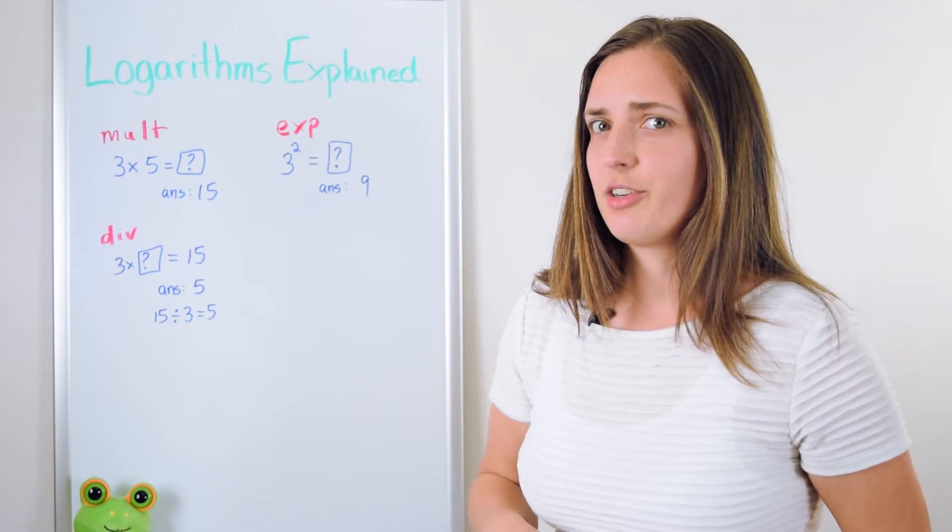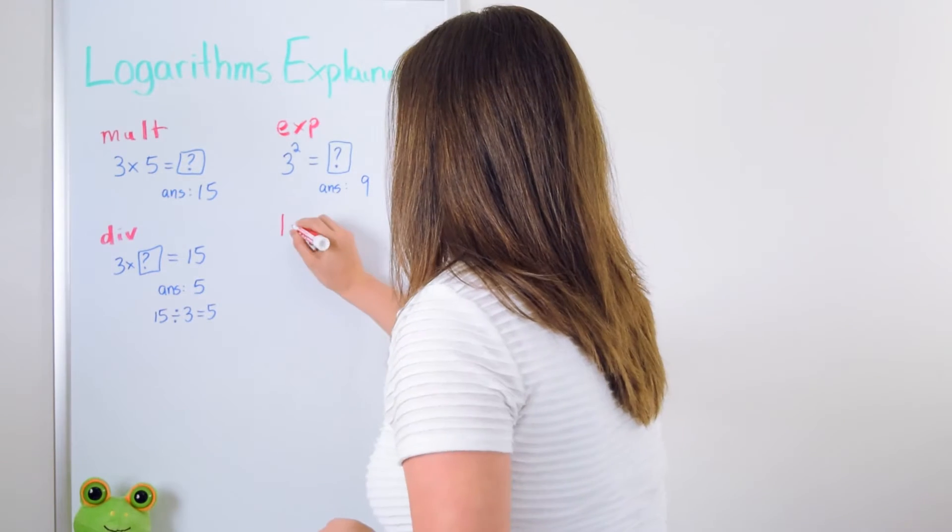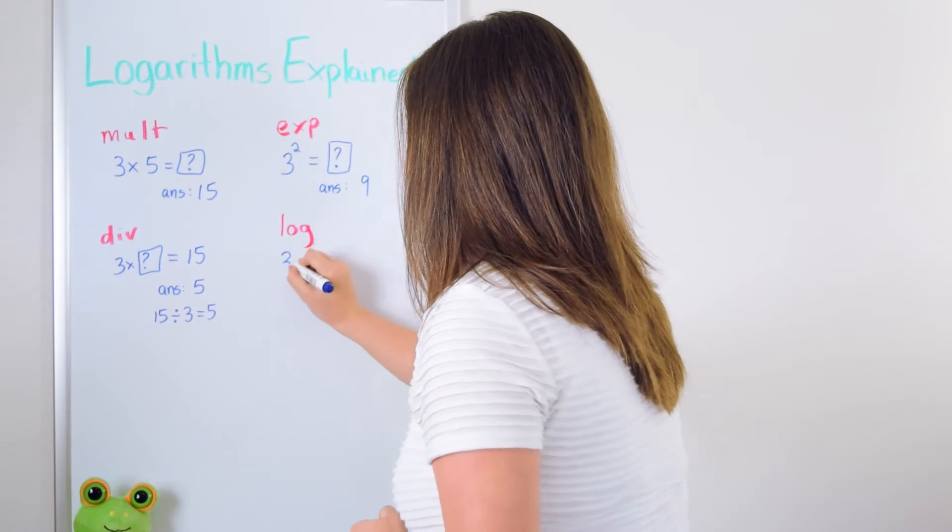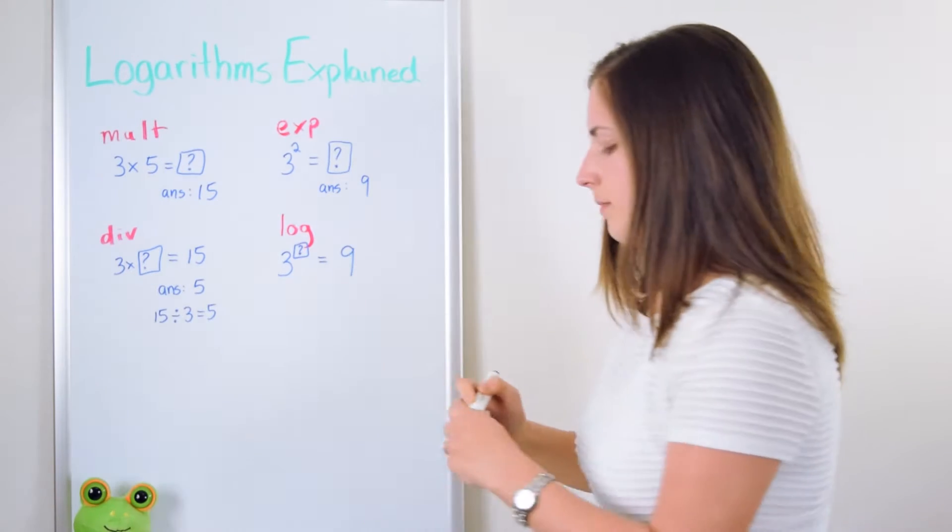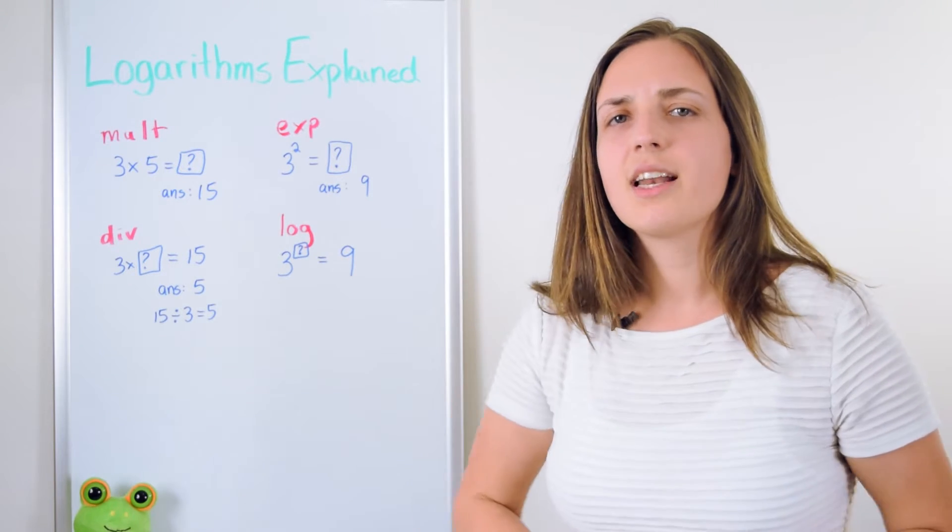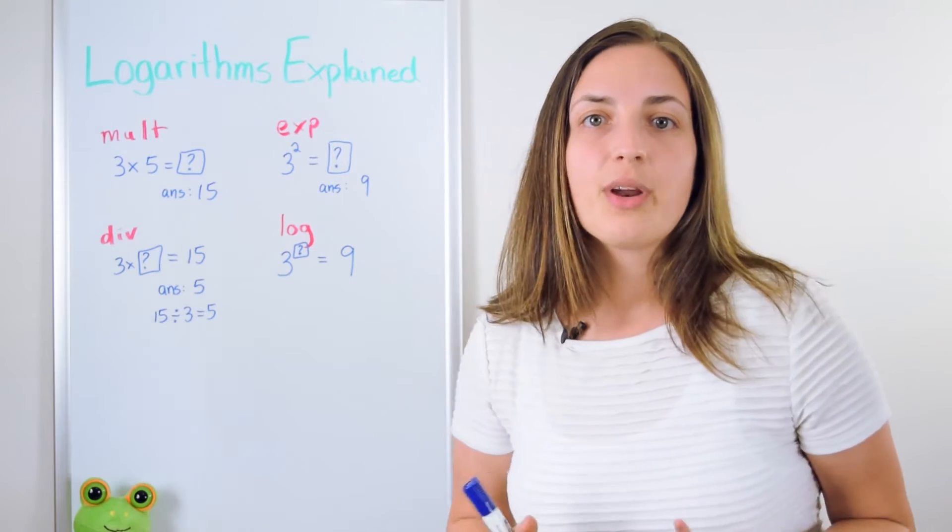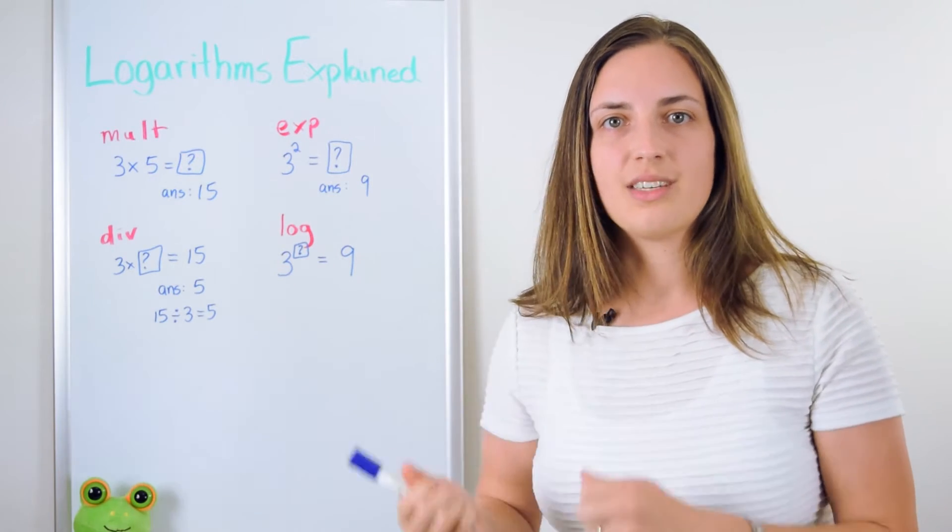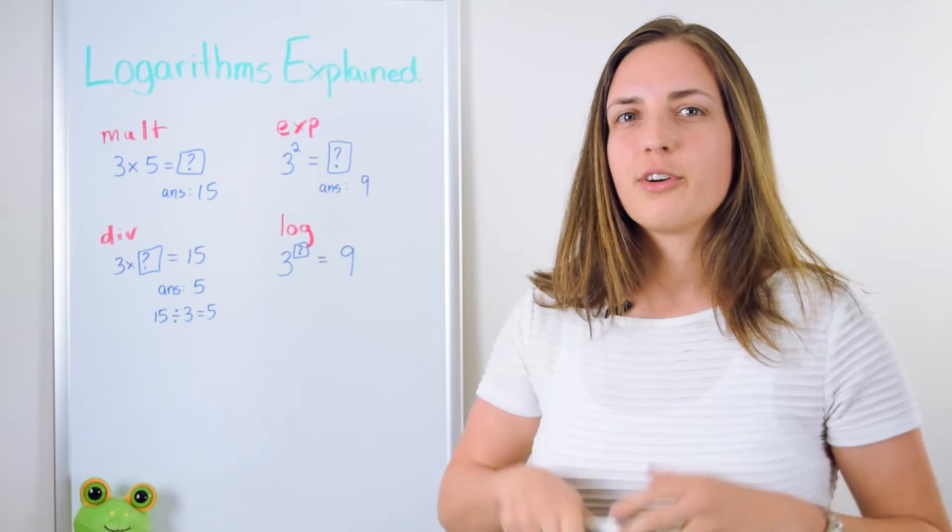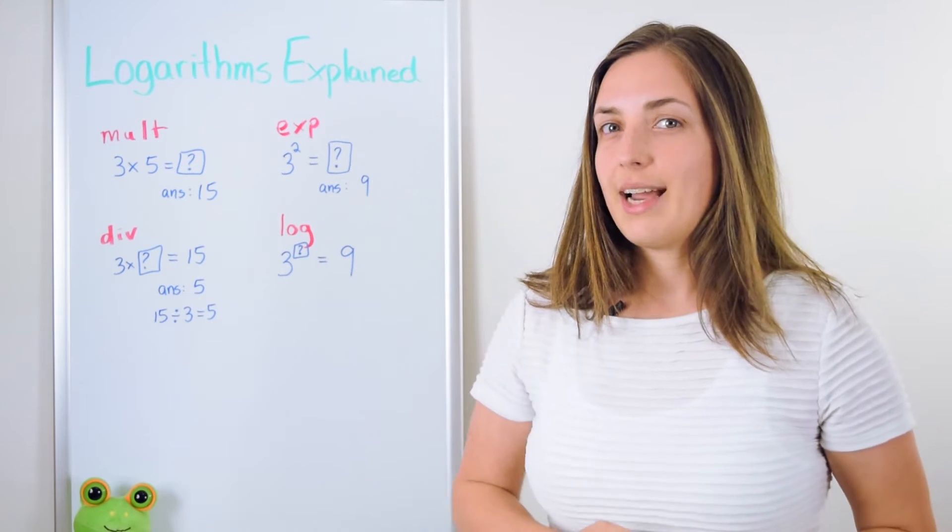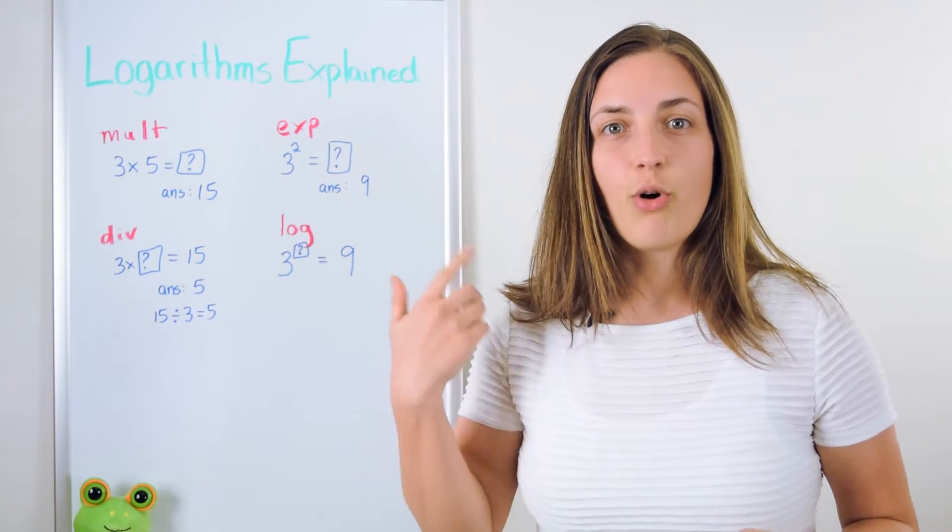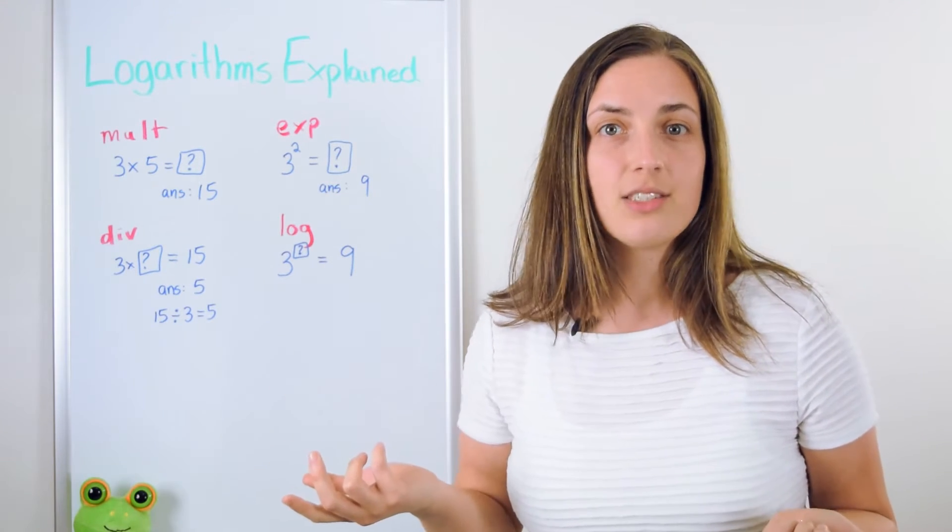Now what's the reverse question? Let's say instead of asking you 3 to the power of 2 equals what, I now say 3 to the power of what equals 9. Do you see how that's a different question? So in order to answer that question, we can just think through options in our head until we come up with the answer 2.